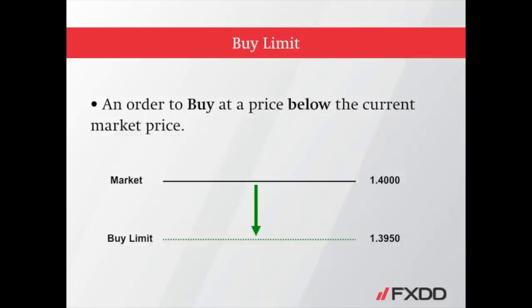Let's start with the buy limit. A buy limit is a pending order you place when you wish to buy at a price below the current market price. As an example, if the EURUSD is currently trading at 1.40 ask and you wish to buy if the price drops to 1.3950, you may consider setting a buy limit order at 1.3950.